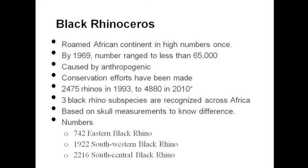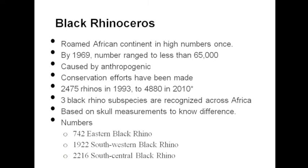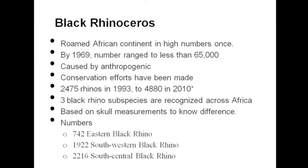This decline is caused by anthropogenic factors, also known as human activity — specifically illegal hunting. Conservation efforts have been made: over 2,000 rhinos were recorded compared to 2,475 in 1993, and since 2010 there have been over 4,880 recorded.